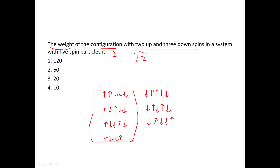We took two and three, two and four, and two and five — not two and one, because two and one is the same as one and two; the particles are indistinguishable. So we got three more ways from this part, giving us a running total of four plus three, which is seven.